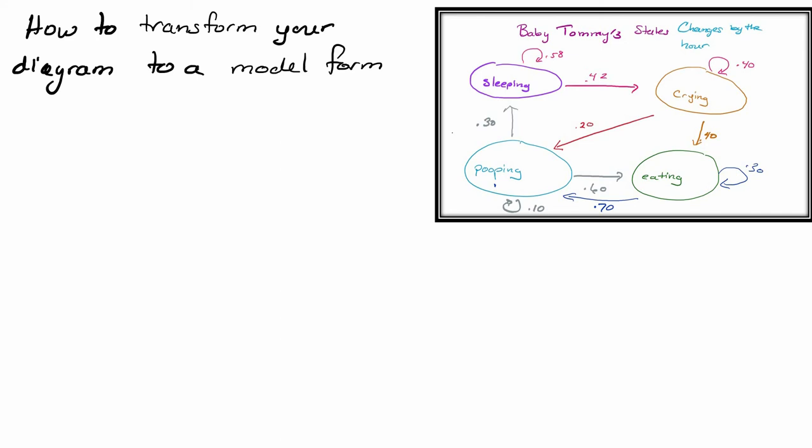Alright, now this is the mechanics. Once you have the state diagram for your Markov model, how do you get it into a model formulation? There's no formulas here, no qualities or equations set up. How do we do that next piece? So I have the state diagram here so that we can look at it.